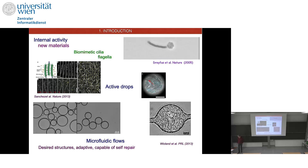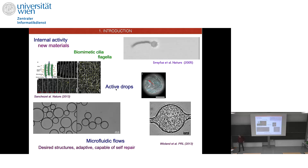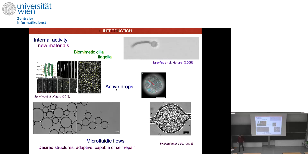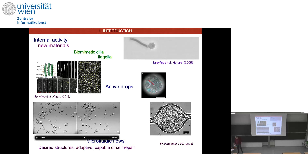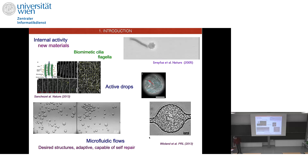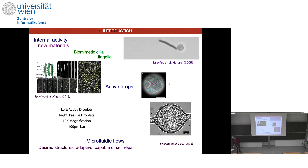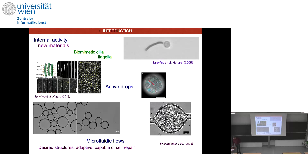This has opened challenges in how we can use these systems to create new materials. For example, these are active emulsions — drops whose surface is covered by microtubules, which are active and generate new types of emulsion in microfluidic systems. These are bacteria that can make fluid flow or organize flows at the microfluidic scale; you can see them rotating here.